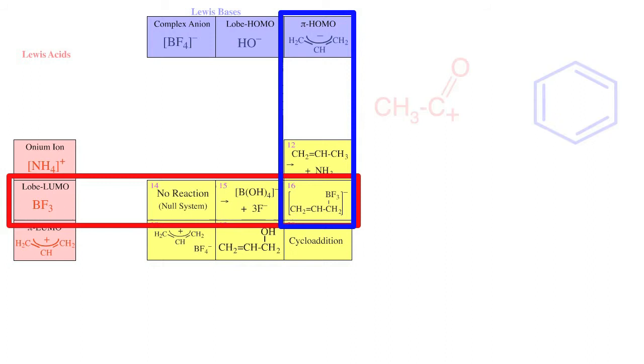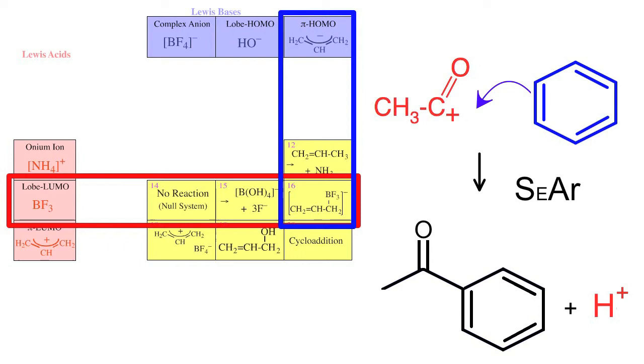The acyl cation can interact with a pi HOMO Lewis base such as benzene in an electrophilic aromatic substitution reaction typified by Friedel-Crafts acylation.